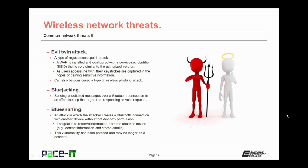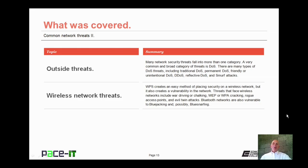Related to bluejacking is bluesnarfing. It's an attack in which the attacker creates a Bluetooth connection with another device without that device's permission. The goal is to retrieve information from the attacked device, such as contact information or stored email. This vulnerability has been patched and may no longer be a concern, but you still need to be aware of it. That concludes this session on Common Network Threats Part 2. I talked about outside threats and concluded with some wireless network threats. On behalf of Pace IT, thank you for watching this session and I hope to do another one soon.